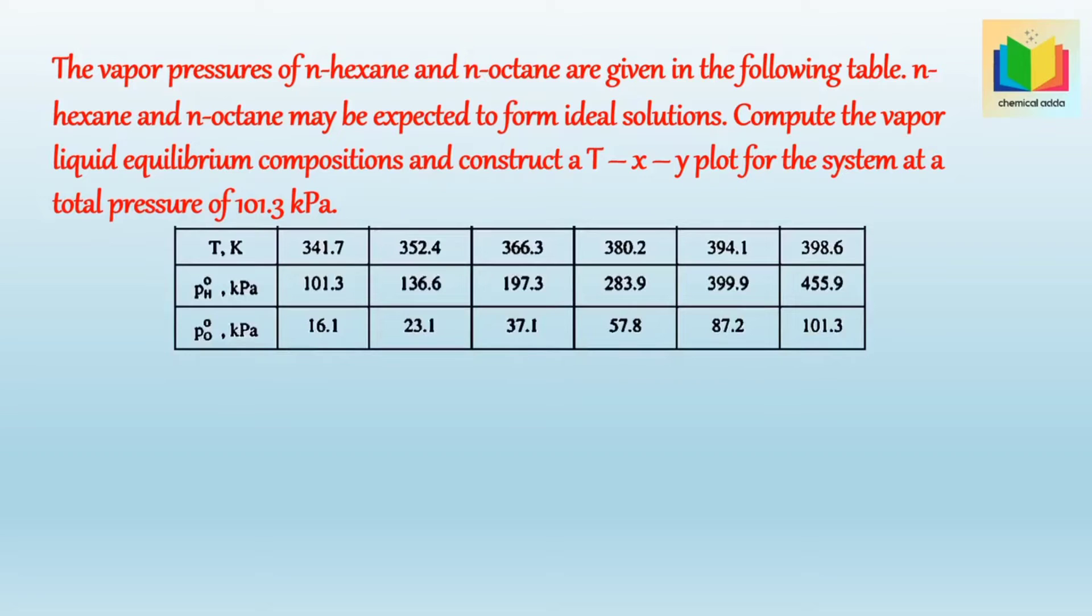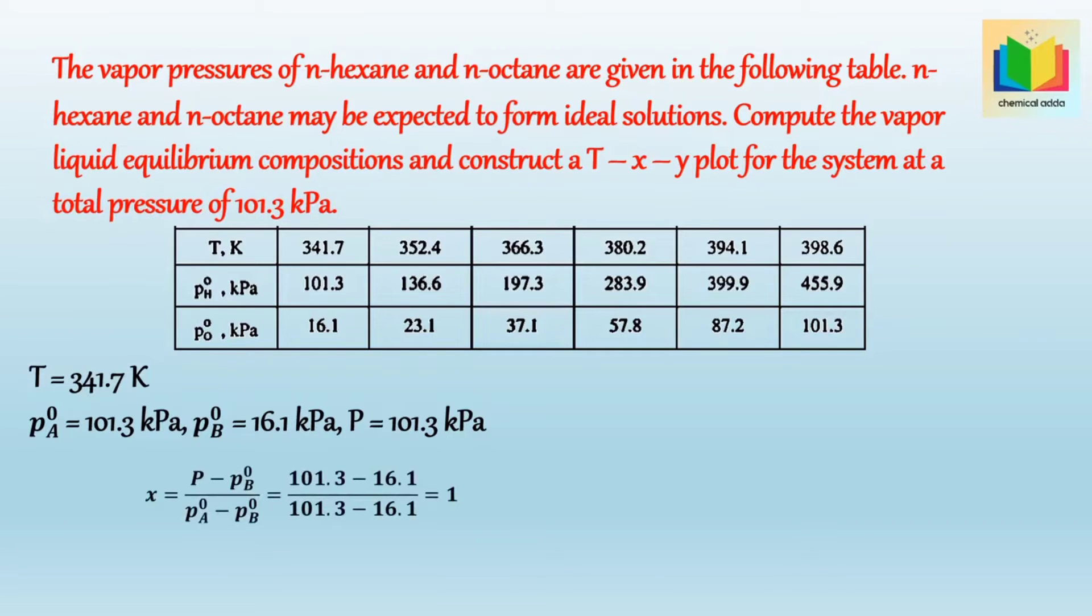From table, we can see that at temperature 341.7 Kelvin, PA0 that is the vapor pressure of hexane is 101.3 kilopascal, and PB0 that is the vapor pressure of octane is 16.1 kilopascal. And the total pressure that is P is equal to 101.3 kilopascal. So as we know the formula for X is P minus PB0 divided by PA0 minus PB0. After putting the values and solving it we get X is equal to 1. Now let's calculate Y. So Y is equal to PA0 into XA divided by P. So after putting the values and solving it we get Y is equal to 1.